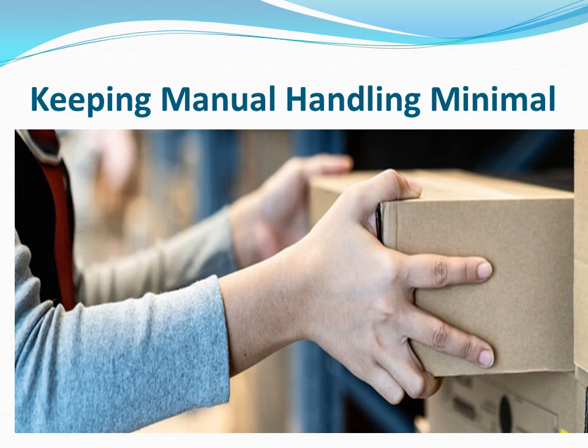Keeping manual handling minimal is another key principle. Design the warehouse or DC such that manual handling is minimized — ideally no more than three to five touches while goods are in the warehouse. Operations that handle goods more times due to severe design or building constraints are often at the root of higher costs.